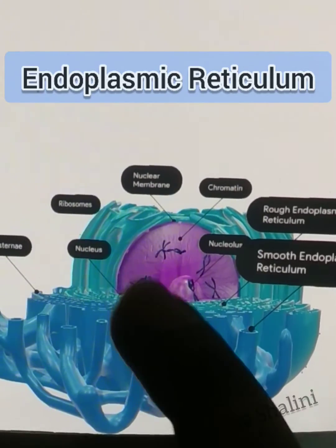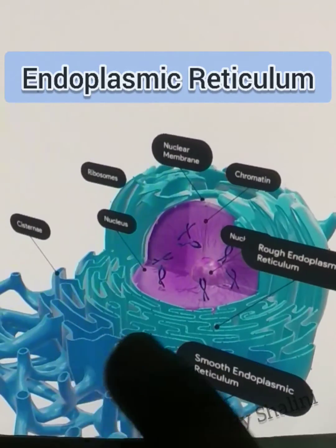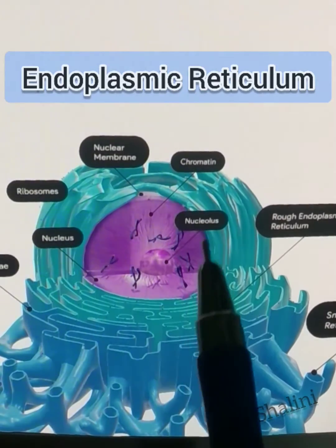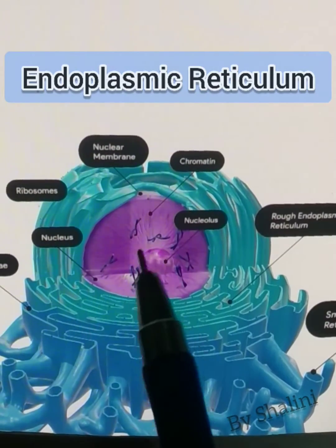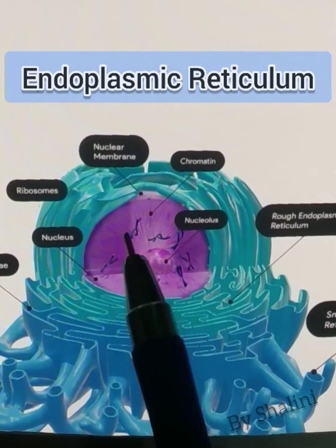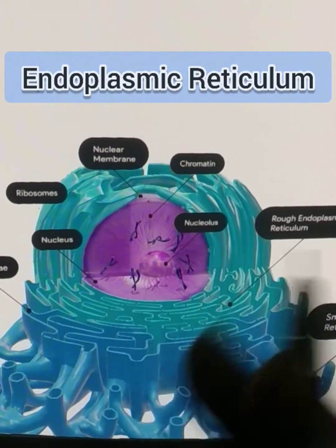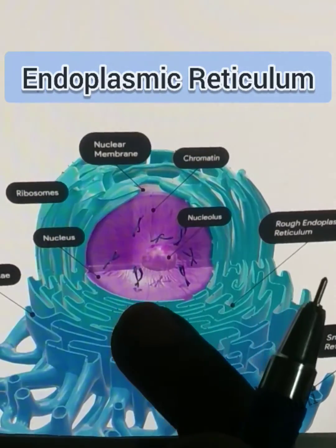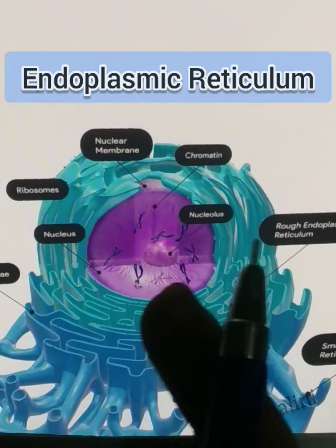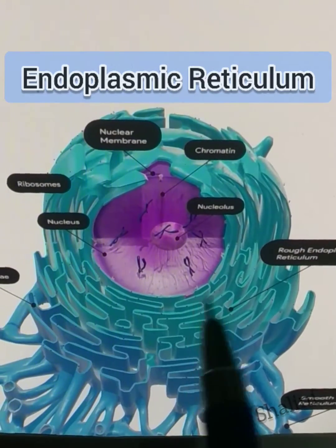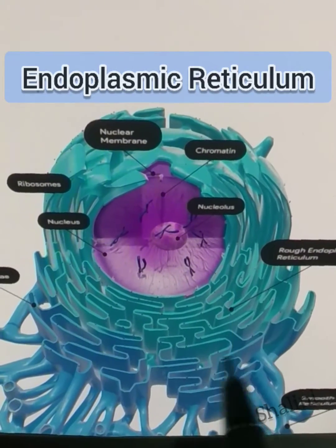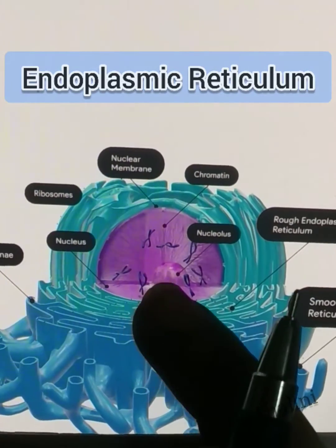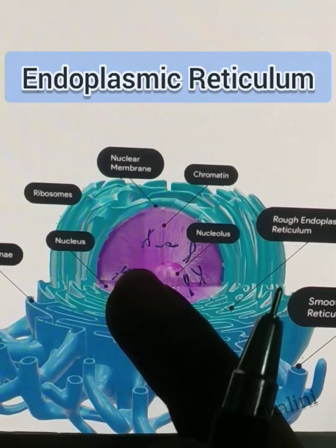Here you can see the clear 3D version of endoplasmic reticulum. This is the nucleus, this is the nucleolus, and this is the chromatin — that is, chromosomes. Surrounding the nucleus you can see some network-like structures; this is called the endoplasmic reticulum.